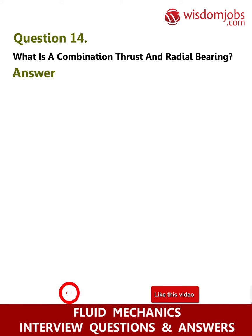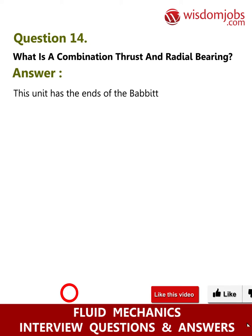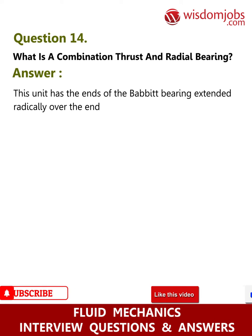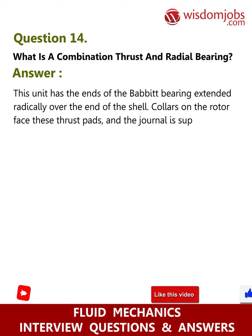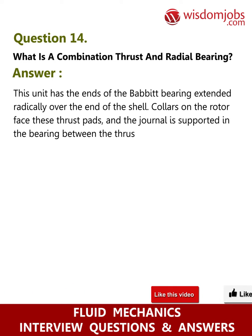Question 14: What is a combination thrust and radial bearing? Answer: This unit has the ends of the babbitt bearing extended radially over the end of the shell. Collars on the rotor face these thrust pads, and the journal is supported in the bearing between the thrust collars.